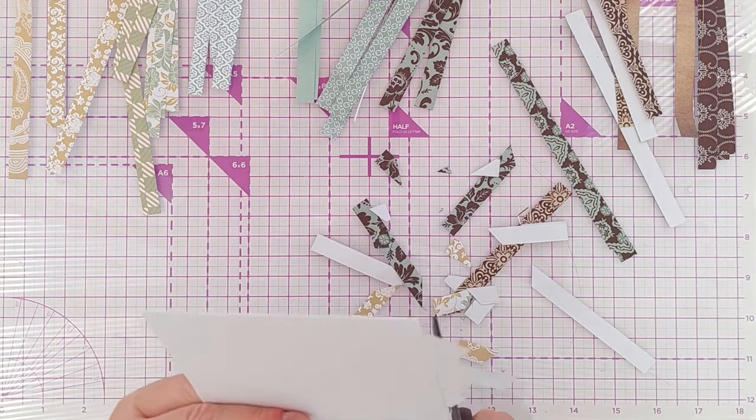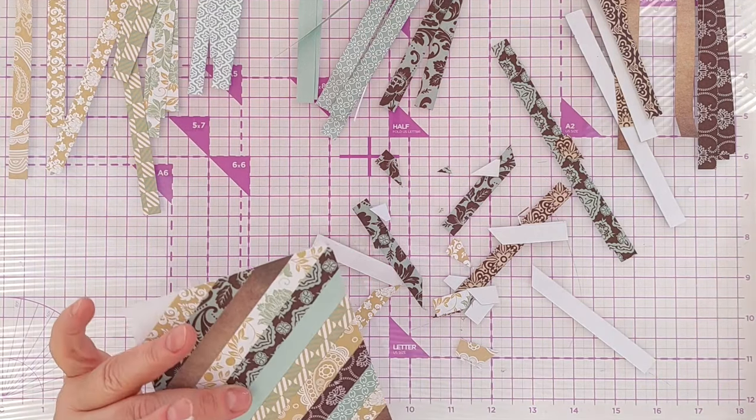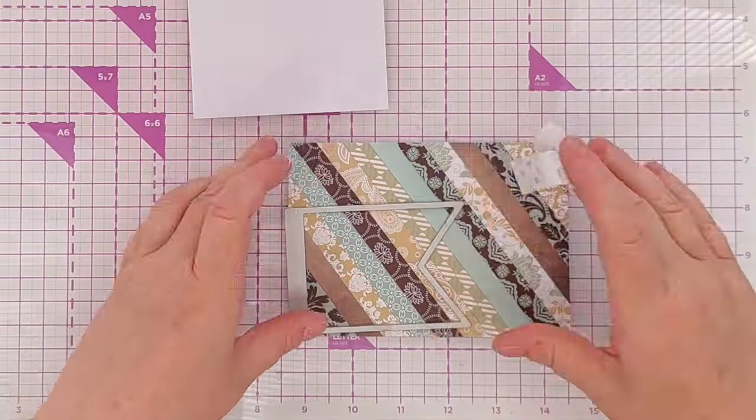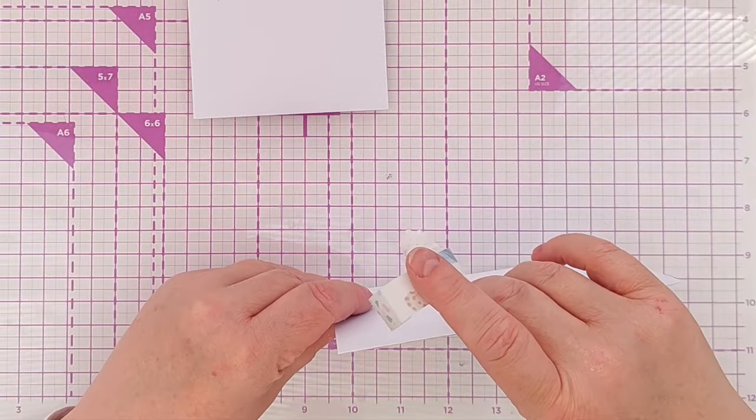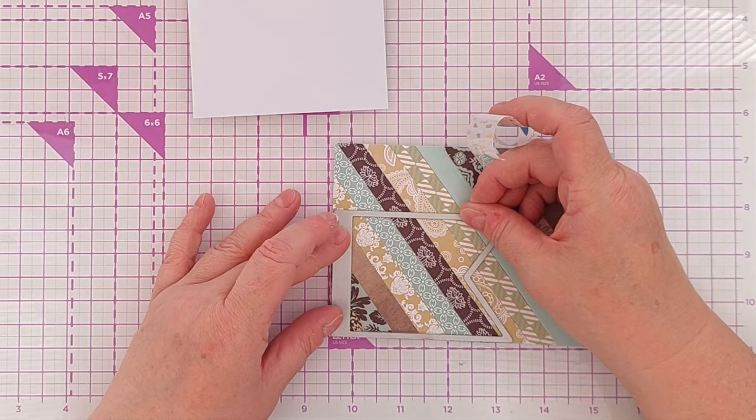As I was flicking through my dies wondering what to die cut from this piece of stripey paper, I found my banner dies and decided to use those. I thought it went well with the diagonal angular pattern.